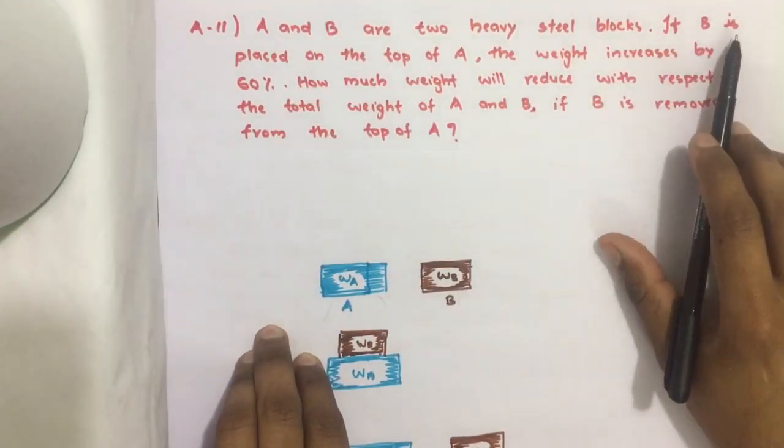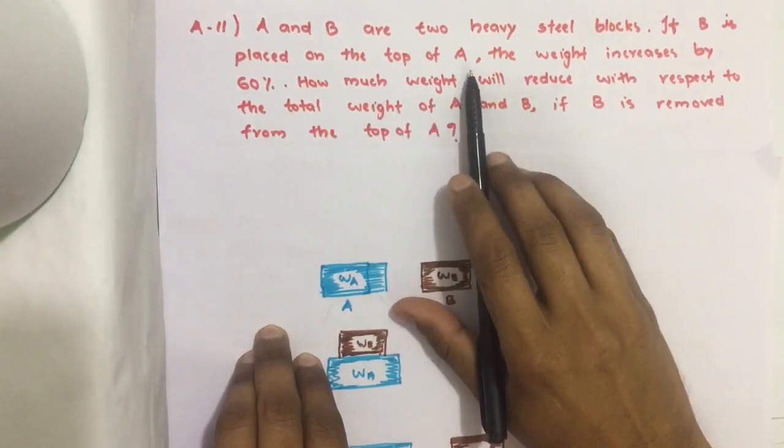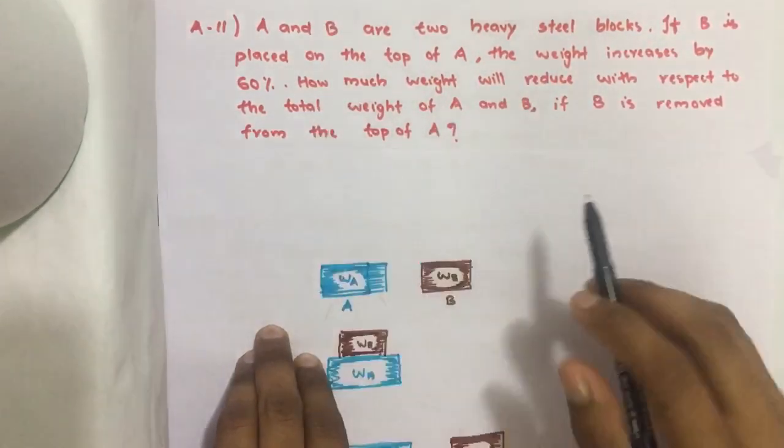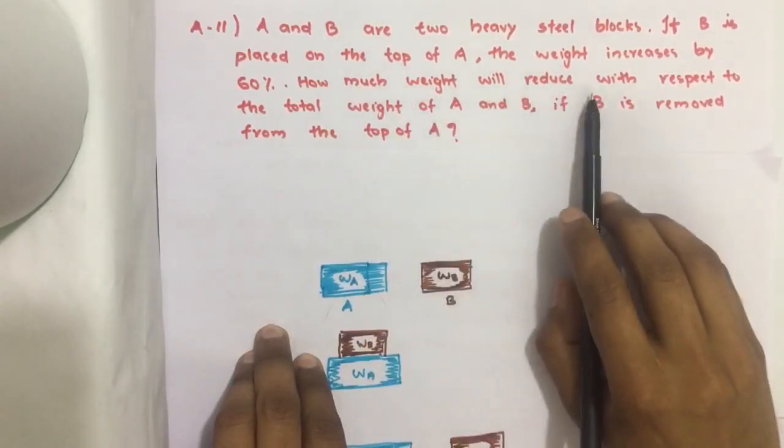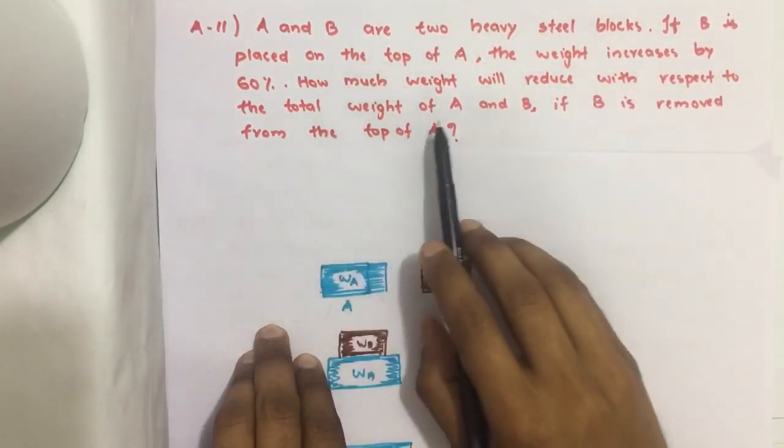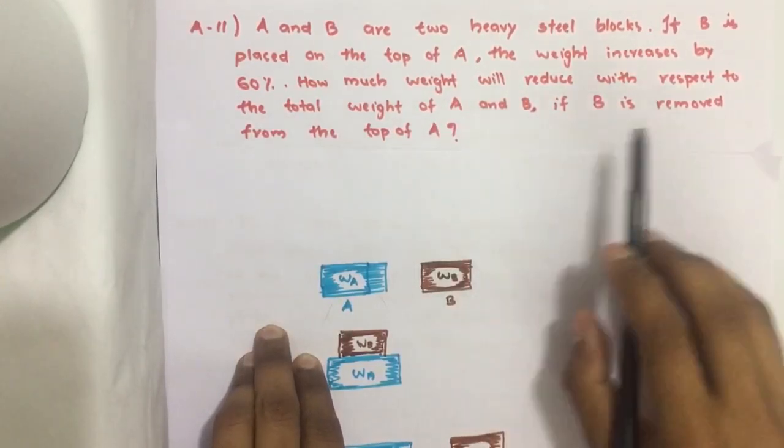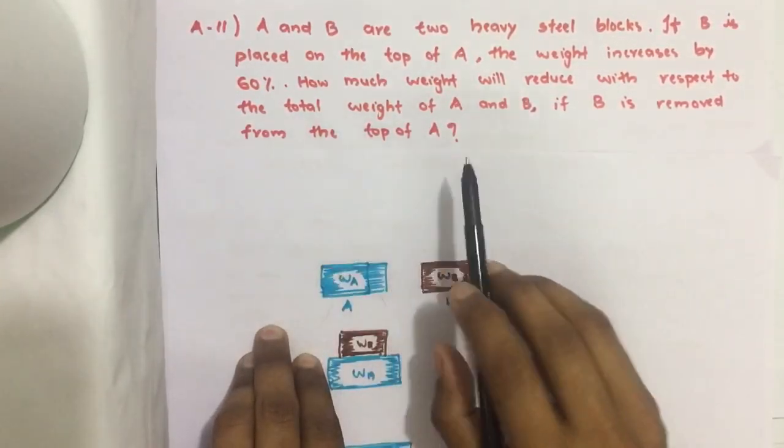A and B are two heavy steel blocks. If B is placed on the top of A, the weight increases by 60%. How much weight will reduce with respect to the total weight of A and B if B is removed from the top of A?